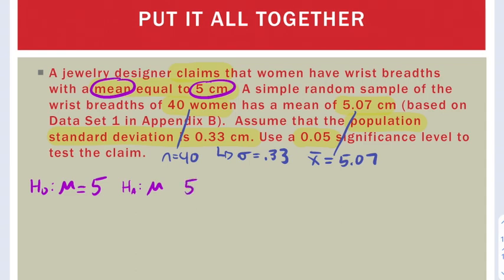Now, the symbol for the alternative here is going to be a little tricky. The claim was equal to, and we've already covered equal to with the null. So if they don't suggest greater than or less than, then the alternative is always going to be not equal to. So be careful with that. That can be confusing.